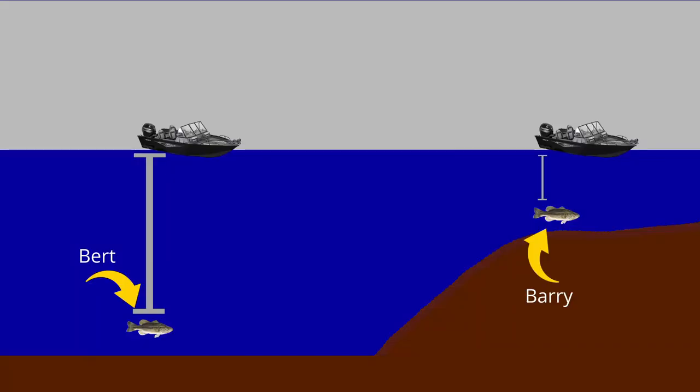So now when you cruise over Bert at 50 feet of water, because it takes more time for the signal to return back to the transducer, more gain is applied, thus making Bert look a lot more like Barry. This is also why TVG helps to clear up surface noise — no or less gain is applied to returns that are closer to your transducer, so small bits of debris and particles floating under the surface are not amplified and will likely not even be visible on your screen at all.